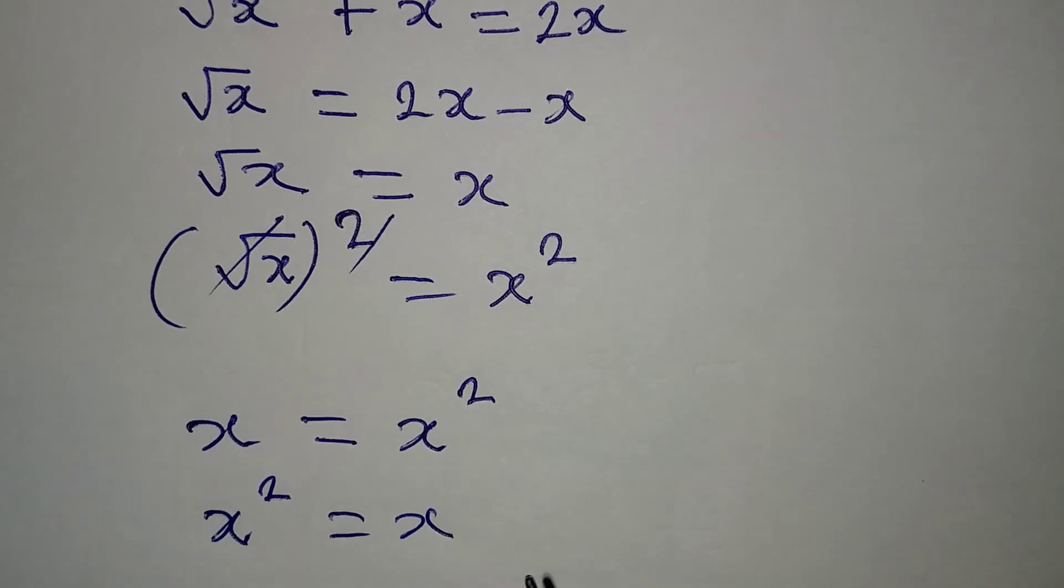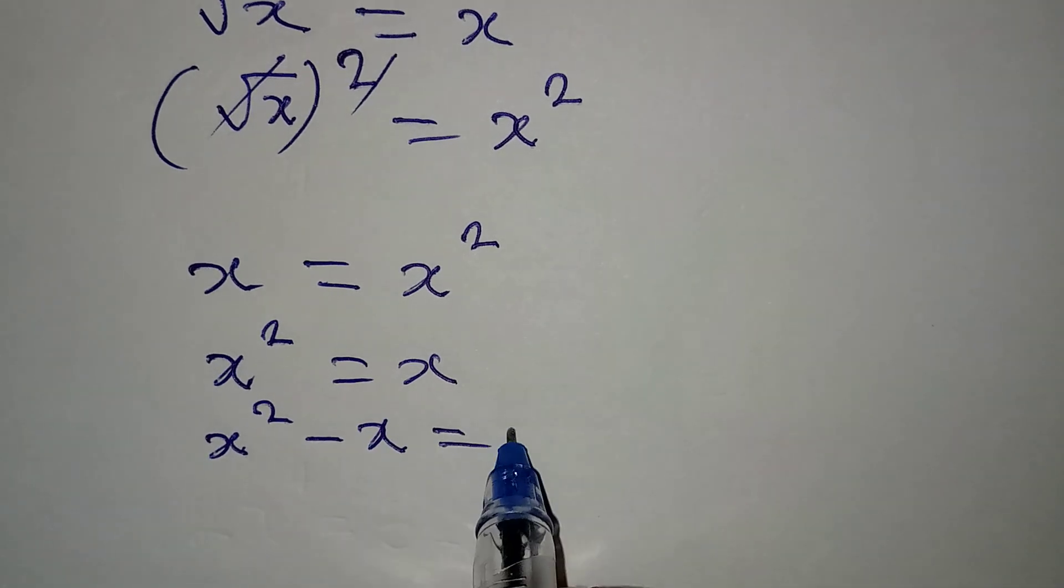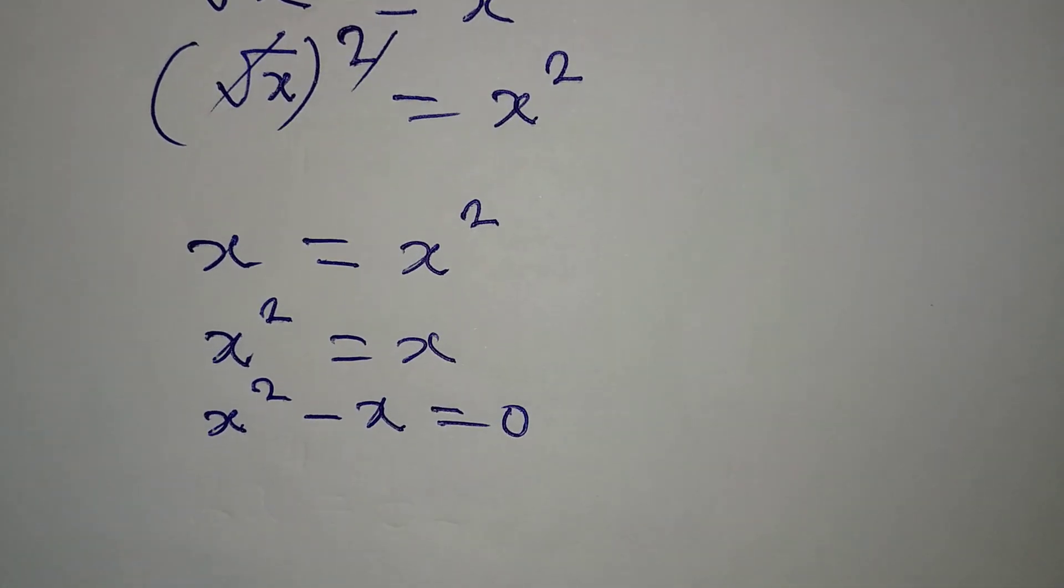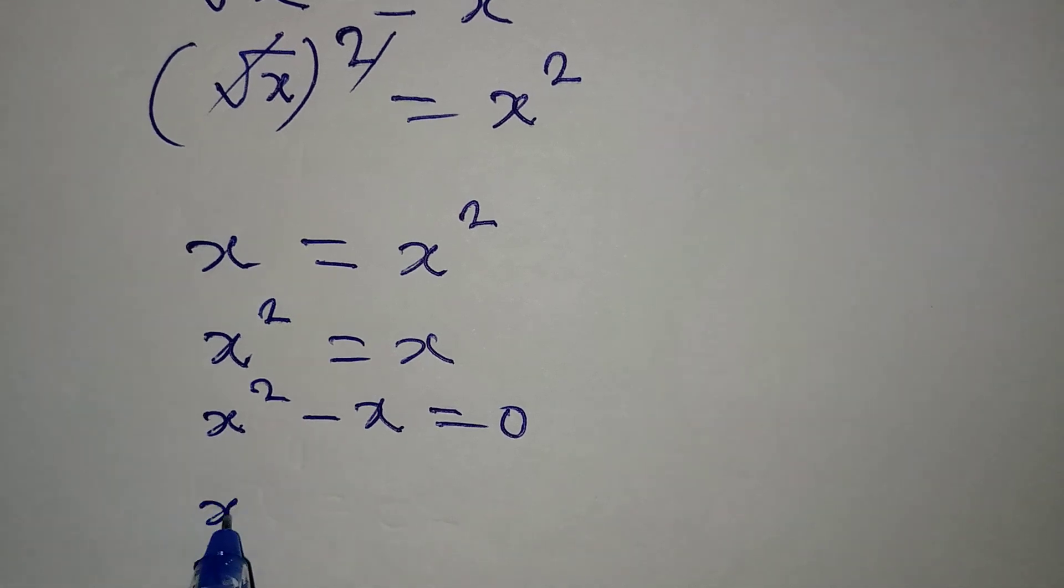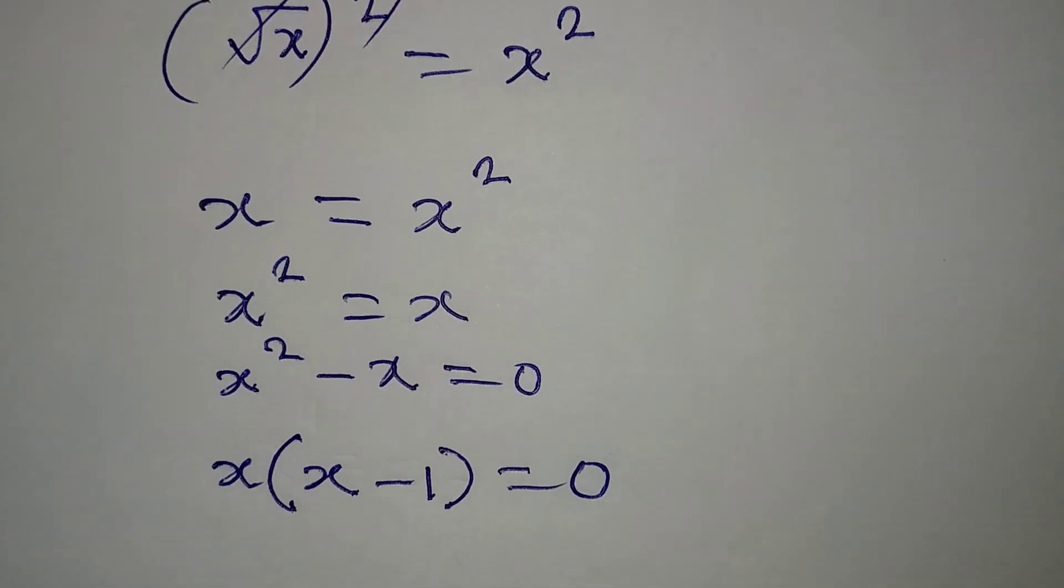Now we can factor out our x. So if x comes out here, we have x times (x minus 1), and then everything equal to zero. If you open the bracket, you're going to have what you have there back.